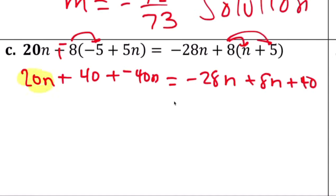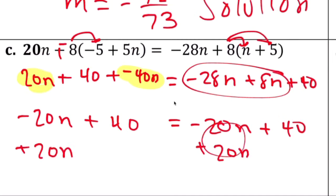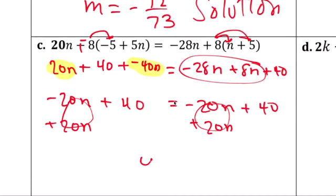Combine these: negative 20n plus 40. Add 20n, add 20n. We've done a lot of these, so that's 40 equals 40, infinite solution.